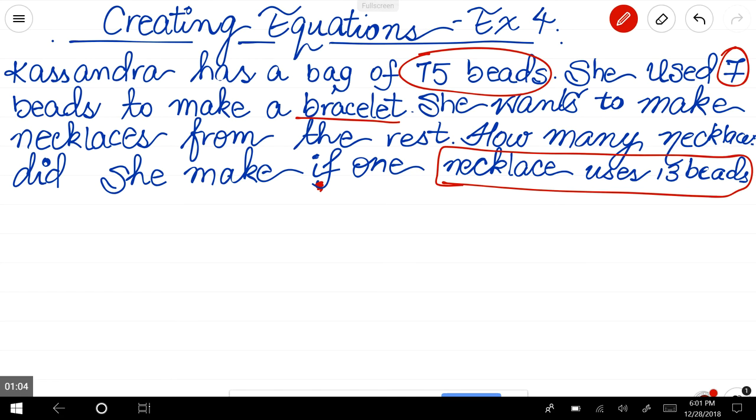Important here is that total number of beads equals 75. She has already used seven beads to make the bracelet. For the rest of the beads that are left, she wants to make necklaces. One necklace uses 13 beads. I don't know how many necklaces she makes, so I can take the number of necklaces as n. I hope that makes sense. I have created my equation after reading and identifying the meat points: 7 + 13n = 75.